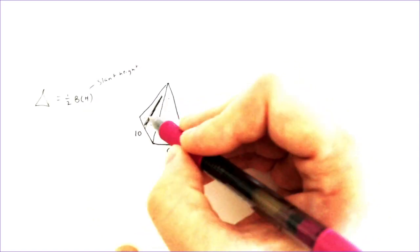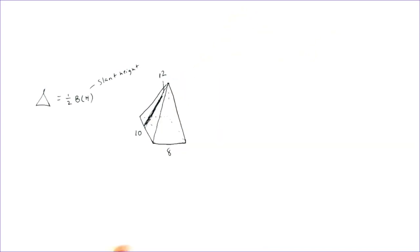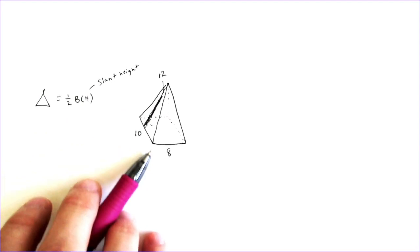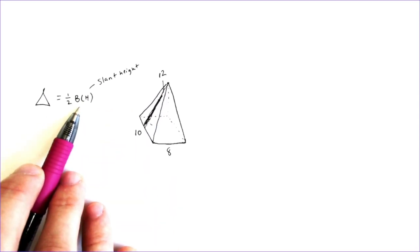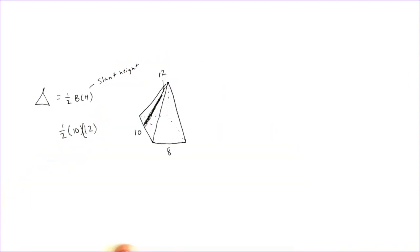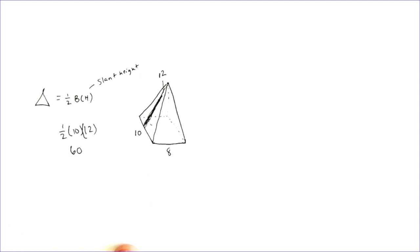Let's say the rectangle at the bottom is ten by eight, and the slant height is twelve. So we have ten by eight for the rectangle, and this triangle here has a base of ten and a slant height — or height of the triangle — of twelve. The formula for the area of that triangle would be one-half times ten times twelve, the slant height, which gives us an area of sixty inches squared.